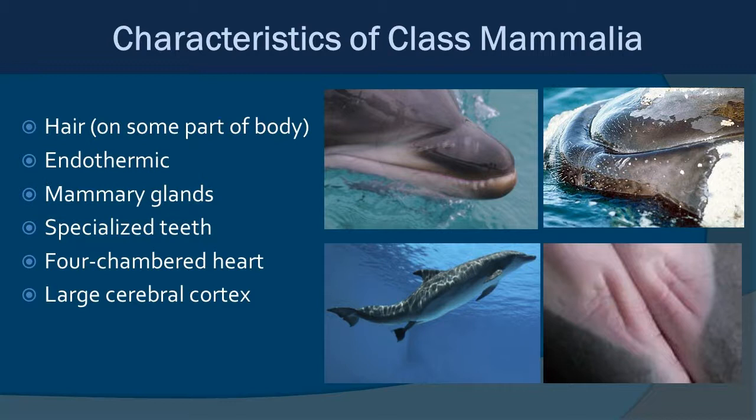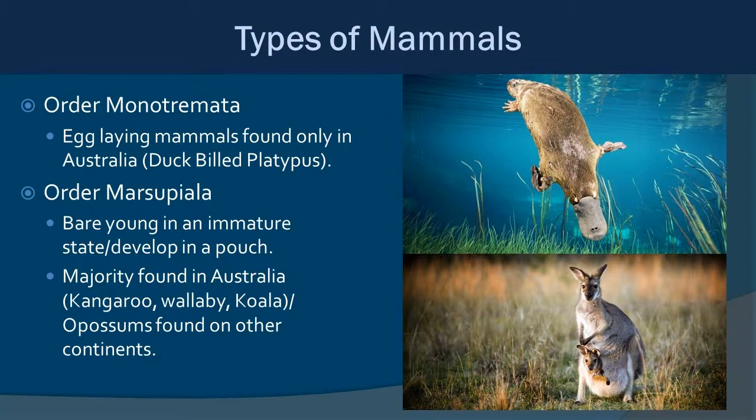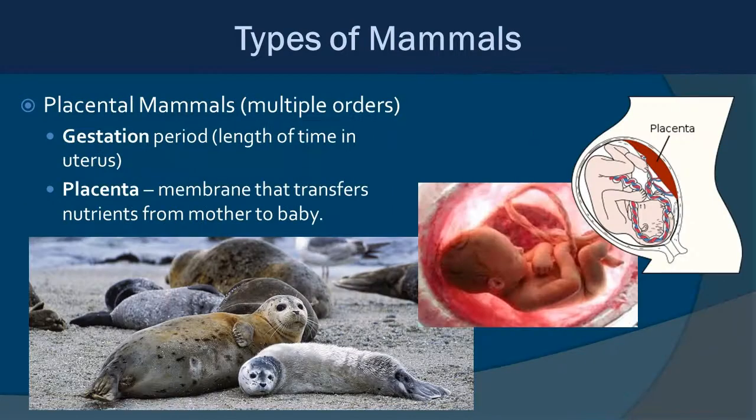Looking at different types of mammals: Order Monotremata includes duck-billed platypus — egg-laying mammals found in Australia. Order Marsupiala includes marsupials such as kangaroos, wallabies, koalas, and opossums, which rear young in pouches. We'll spend most of our time on placental mammals, because marine mammals are placental. The placenta is a membrane that transfers nutrients from the mother to the baby, resulting in live birth.